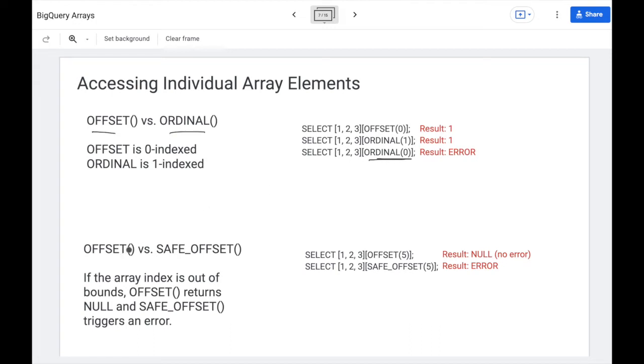Now, if you use offset, if the array index is out of bounds, offset returns null. So actually, if you say offset five of this array one, two, three, you're going to get a null value and no error. Your query will run as normal. If you want BigQuery to interrupt whenever an error occurs, you use the safe offset built in function. And so safe offset will give you an actual error and stop execution if you have an out of bounds index.